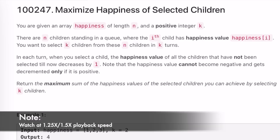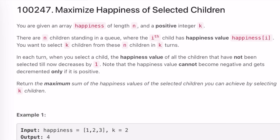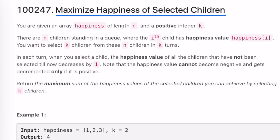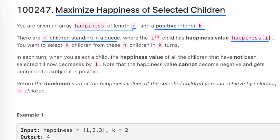Hey guys, welcome to a new video. In today's video we're going to look at a LeetCode problem called 'Maximize Happiness of Selected Children'. In this question we're given an array called happiness of length n, and a positive integer k. n represents the number of children standing in a queue, where the i-th child has the happiness value of happiness[i], and we have to select k children from these n children in k turns.